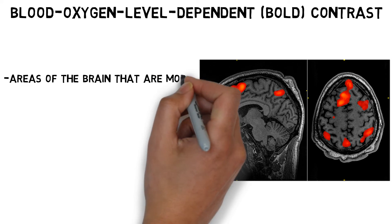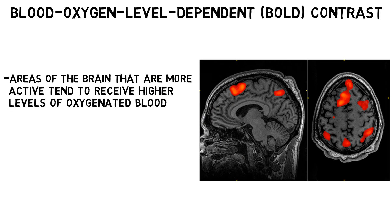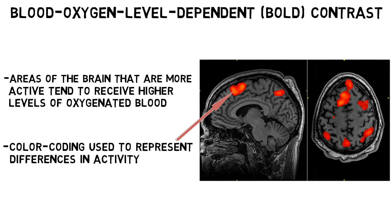Areas of the brain that are more active tend to receive higher levels of oxygenated blood. Thus, higher levels of oxygenated blood in a particular brain region are believed to correspond to higher neural activity in that region. On a typical fMRI image, color coding is used to represent differences in the level of oxygenated blood, and thus differences in activity. Activity in those areas can then be associated with whatever task was performed at the time of the scan.